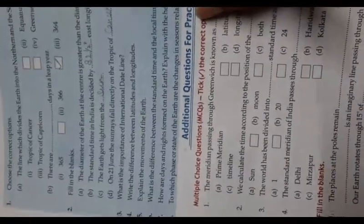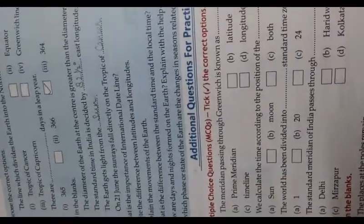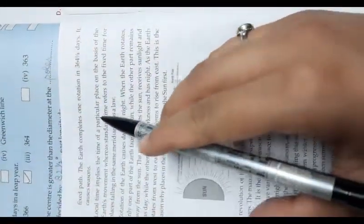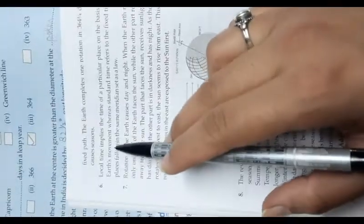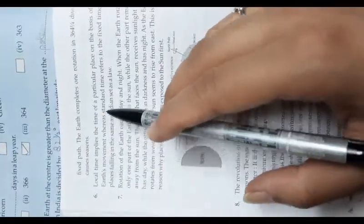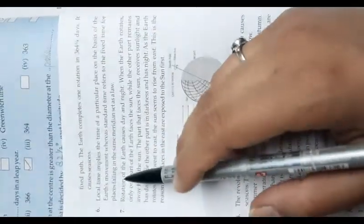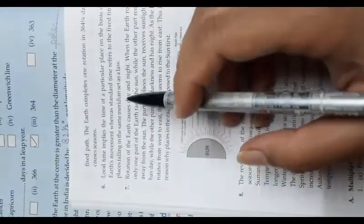Question number 6: What is the difference between standard time and local time? Local time implies the time of a particular place based on the Earth's movement, whereas standard time refers to the fixed time for places falling in the same meridian.